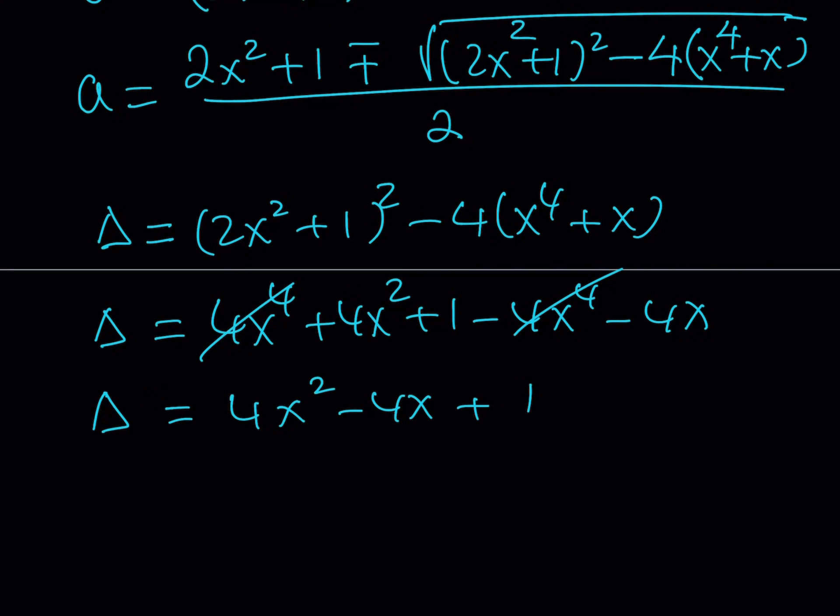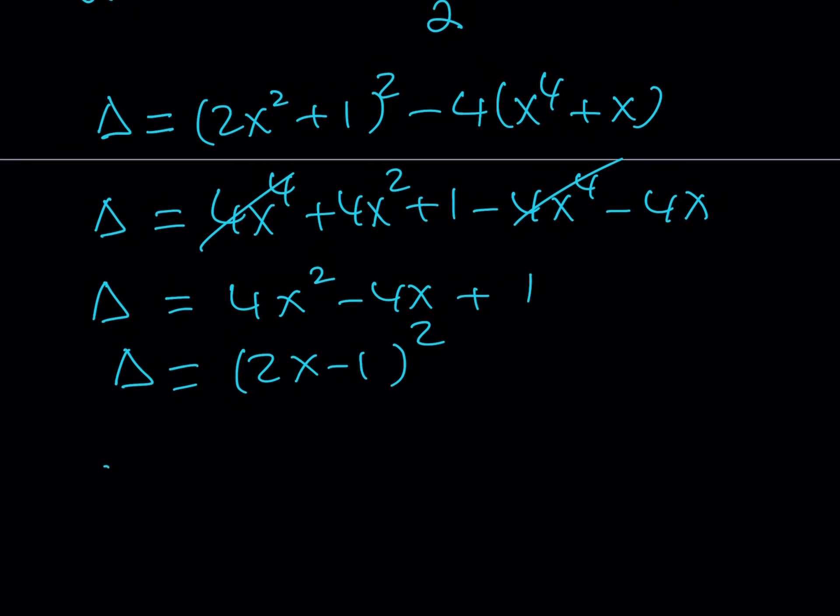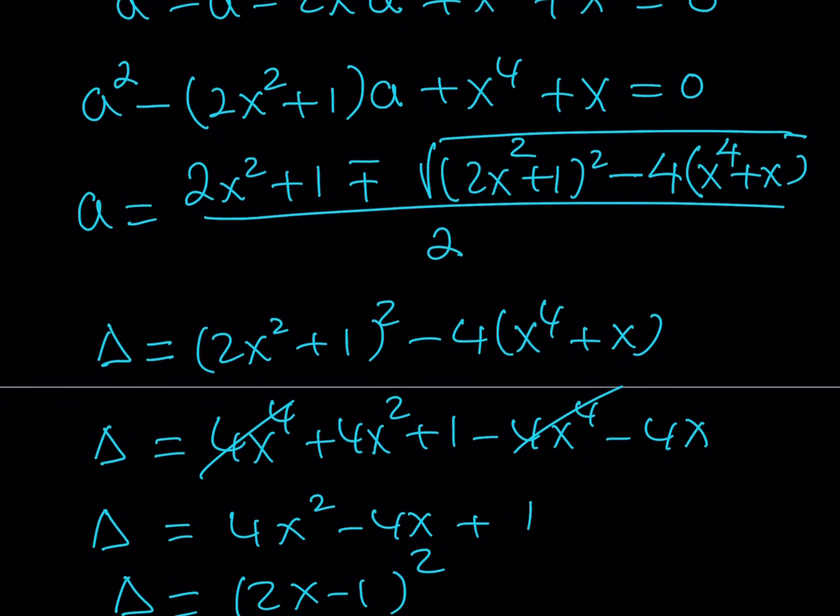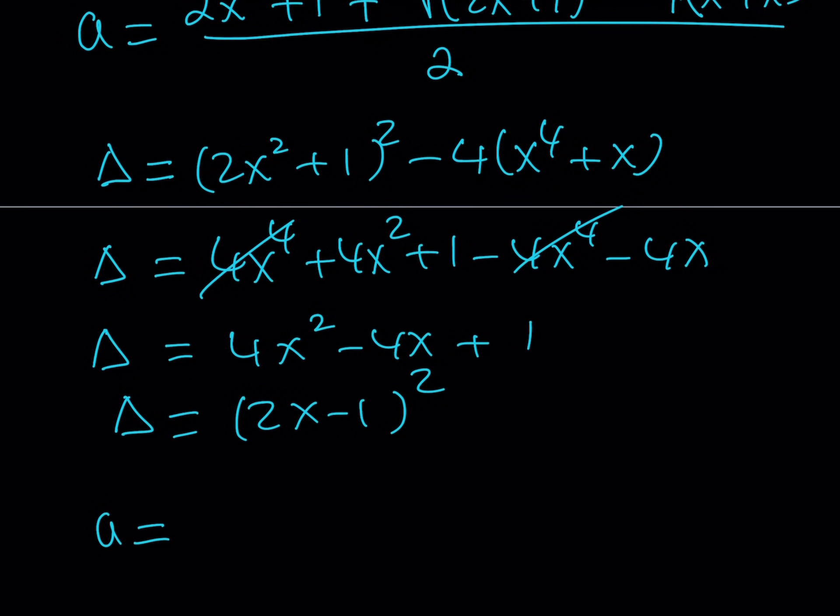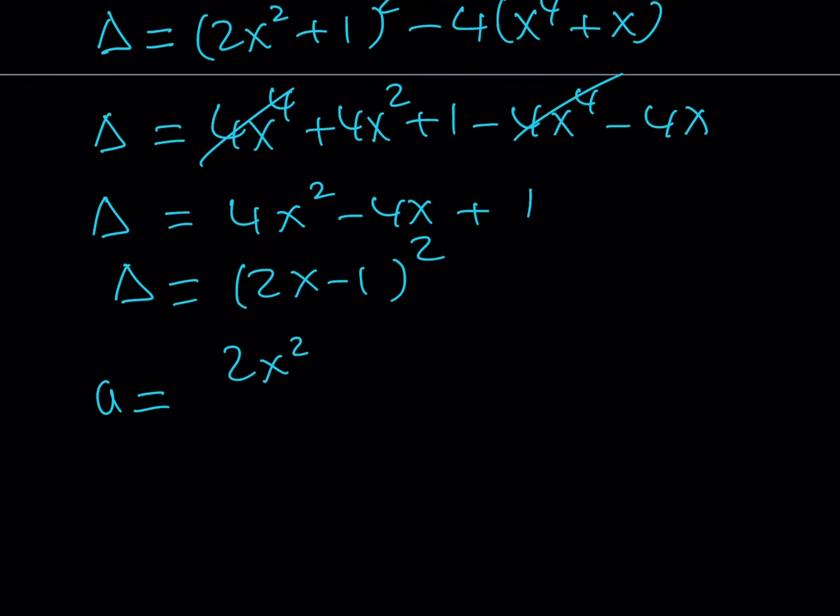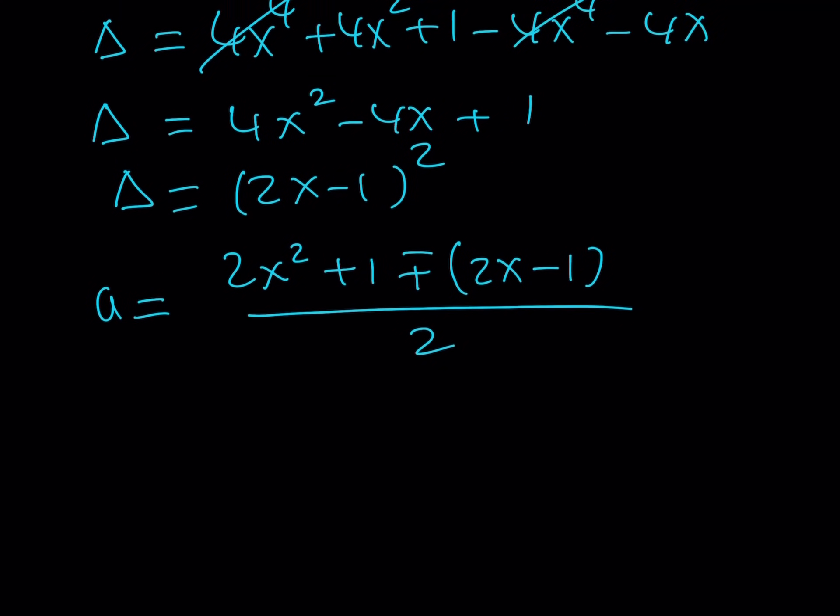Now, we have this discriminant. What am I going to do with that? Well, I can write it as 2X minus 1 quantity squared. Nice. So now, let's go ahead and replace the discriminant with what it is. I can write the A value as 2X squared plus 1 plus minus the square root of the delta. So the square root of that is just going to be that expression without the square. So this is our expression. There we go. Well, so we got the A values in terms of X. What is so good about it? We were trying to solve for X. We will. But first of all, we did this. Let's go ahead and clean it up a little bit.